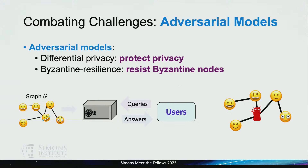And finally, for these stronger adversaries, you can have adversarial models. Differential privacy is the gold standard for protecting user privacy. You can also have various forms of Byzantine-resilient models to handle Byzantine nodes in a decentralized network.